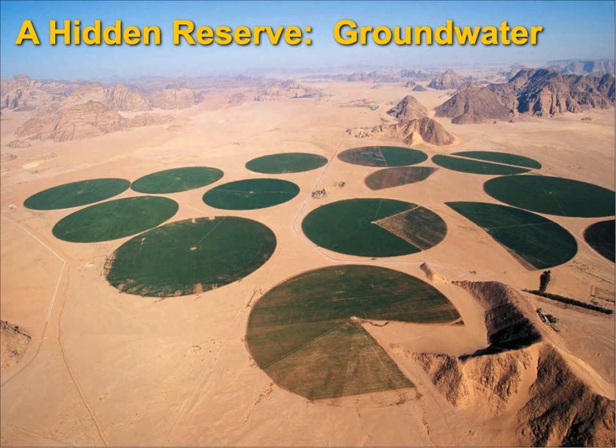Okay, who can tell me what you think these circles are here? They're crops — obviously it's from aliens, right? At least that's what the government would have us believe.